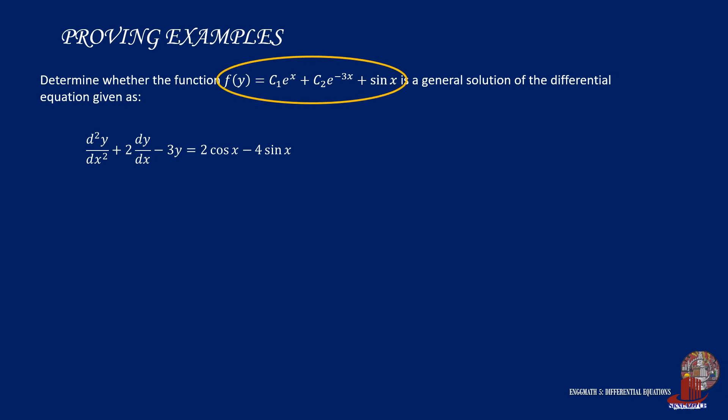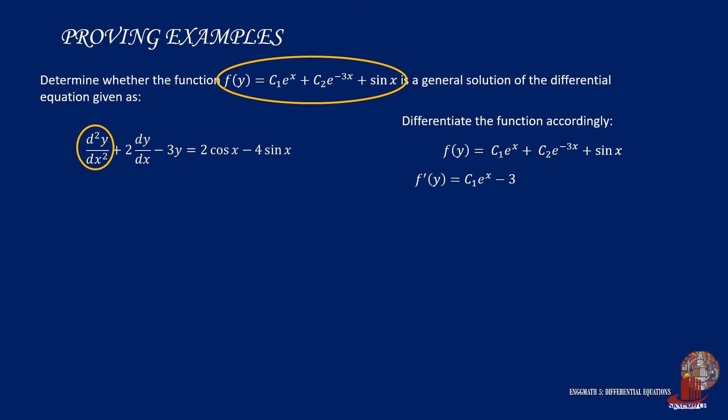We process the given function f(y) equals c1 times e raised to x plus c2 times e raised to negative 3x plus sin x. Since the DE has a second-degree derivative, we must differentiate the solution twice. The first derivative f'(y) is taken next.